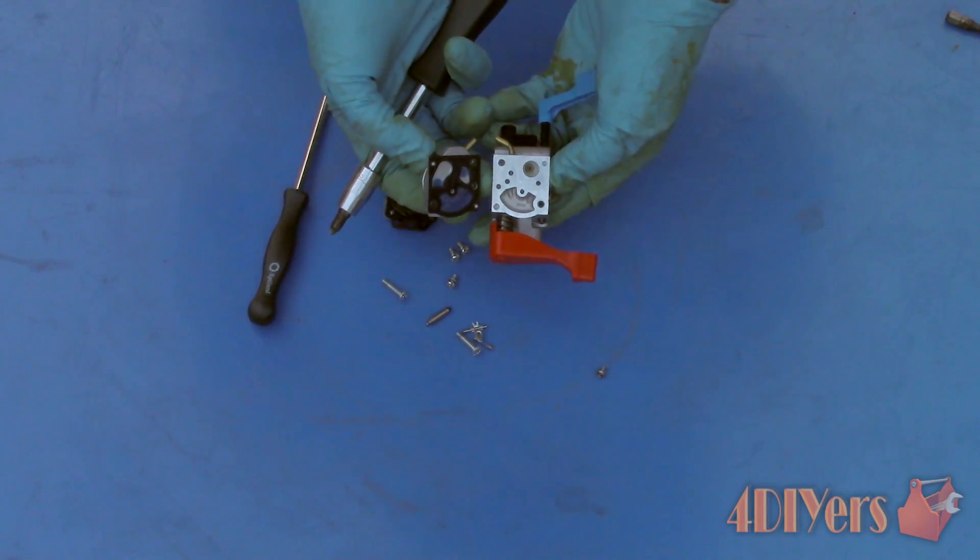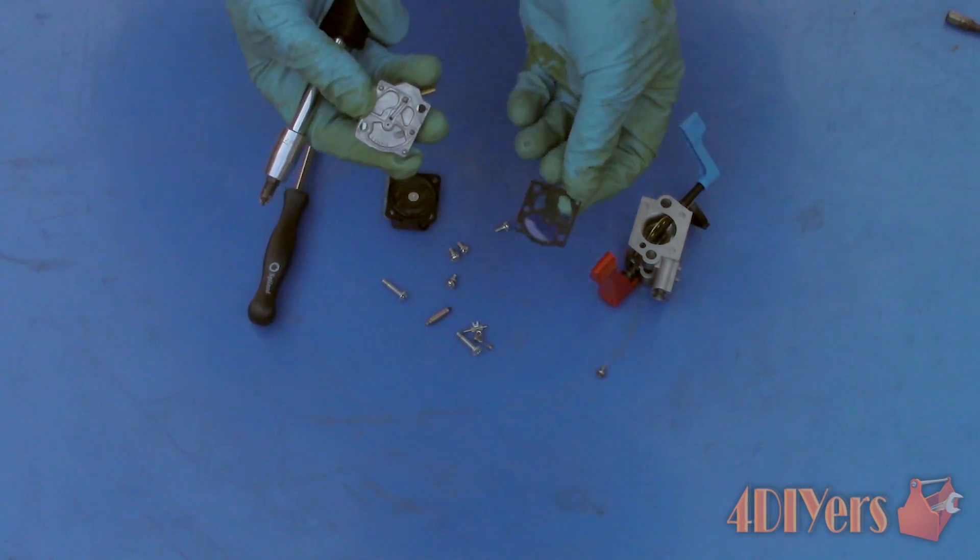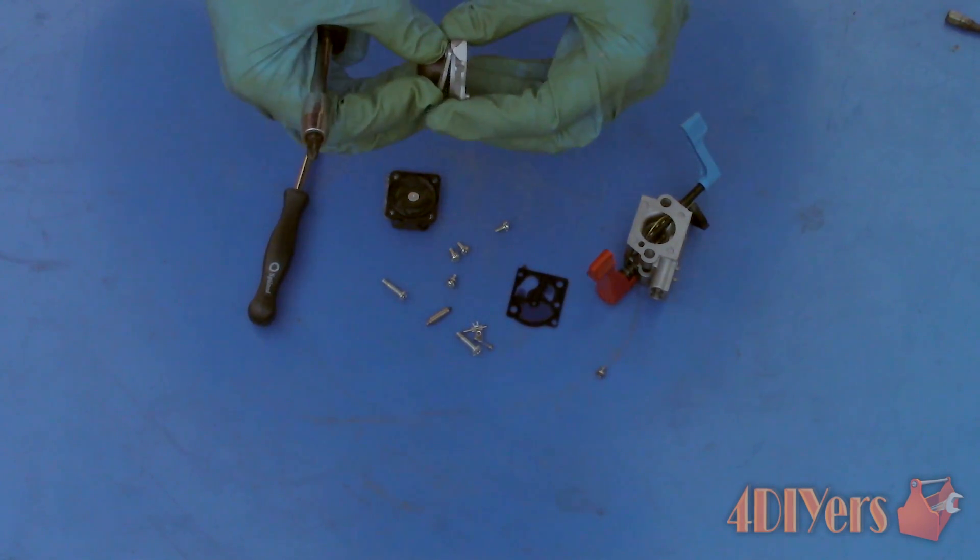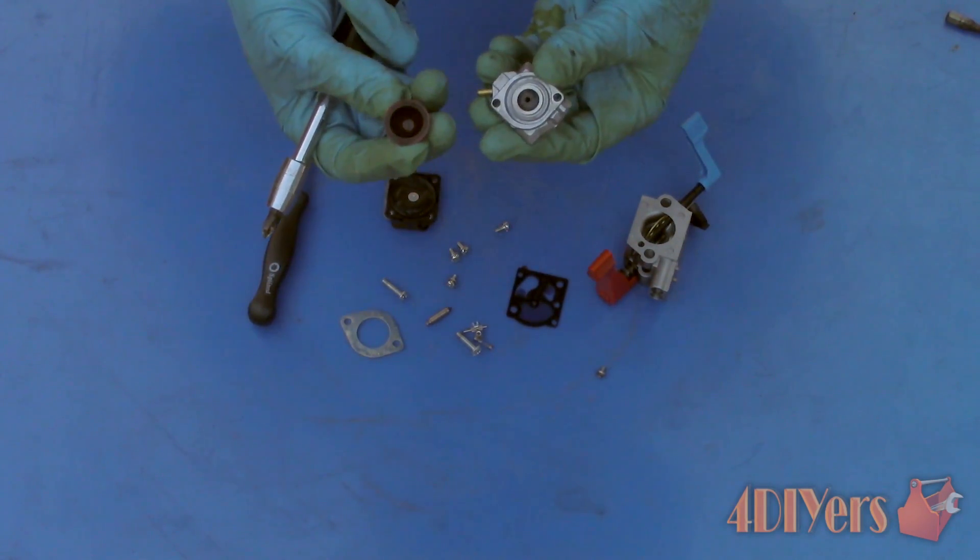Here you will find another diaphragm style gasket which has controlled valves. Again these can deteriorate over time therefore not functioning correctly. Replacement parts can be purchased at the places I have mentioned previously. Also make note of the orientation as it does make the installation process much easier.